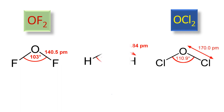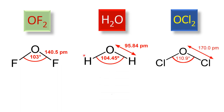Comparing all three, the bond angle of OF₂ is the least, then H₂O, then OCl₂. We cannot blindly say that because all are SP3 hybridized with a bent geometry they will have similar bond angles. We must also consider other factors such as the electronegativity of the element and the bulkiness or steric factor of the element to properly explain bond angles. Thank you.